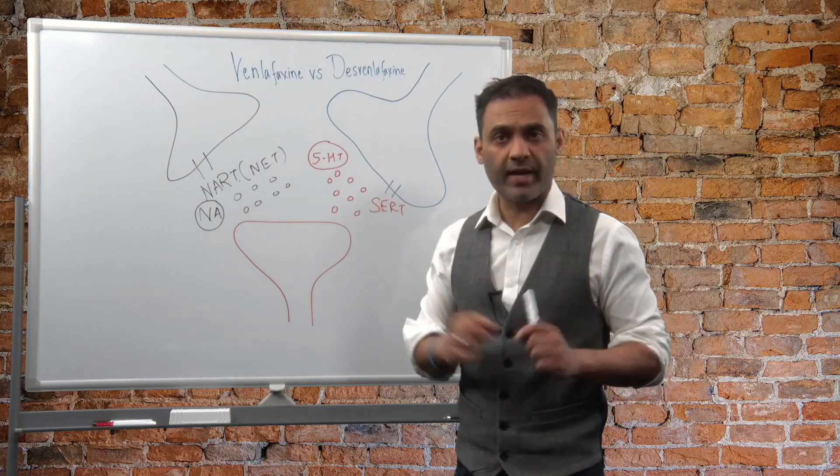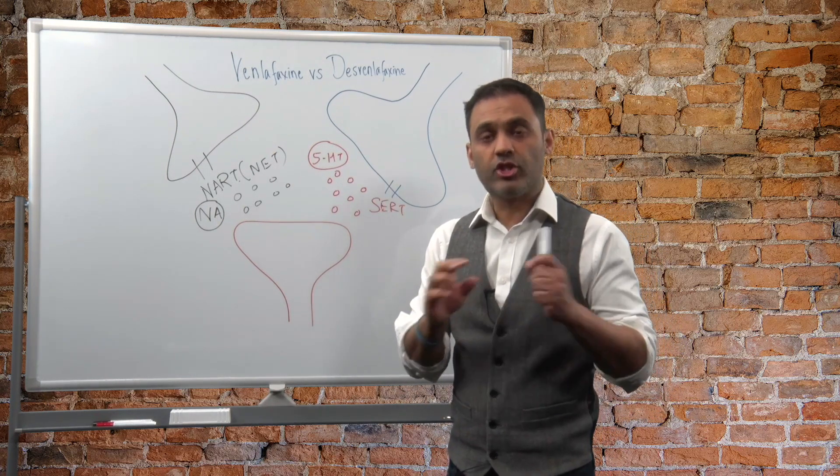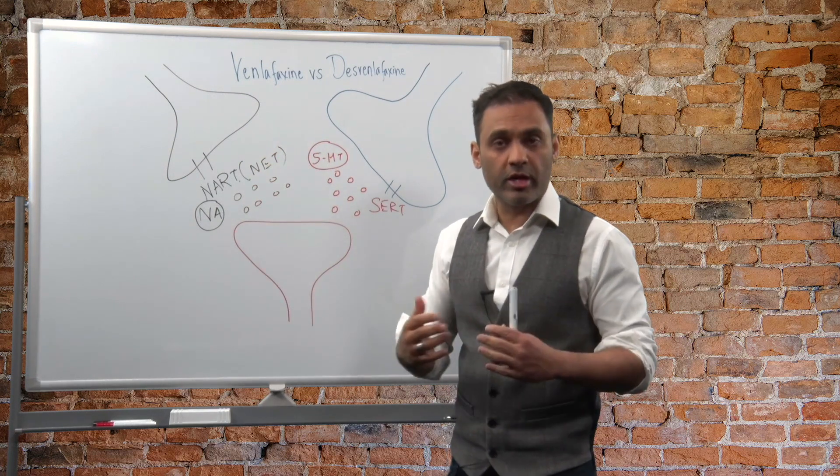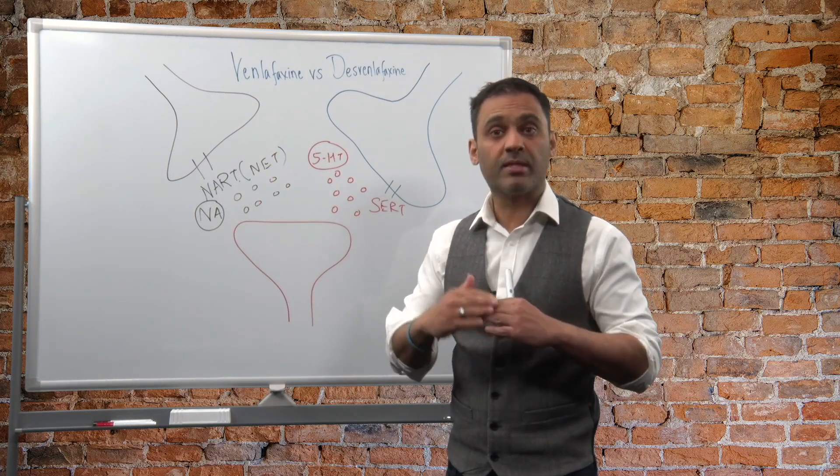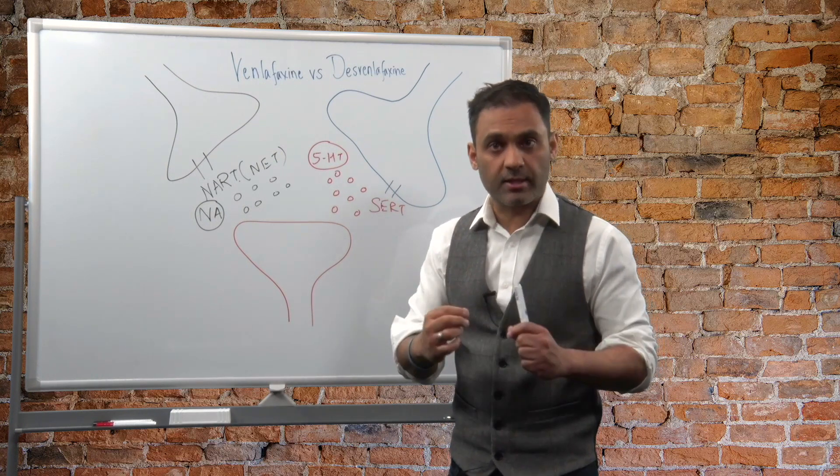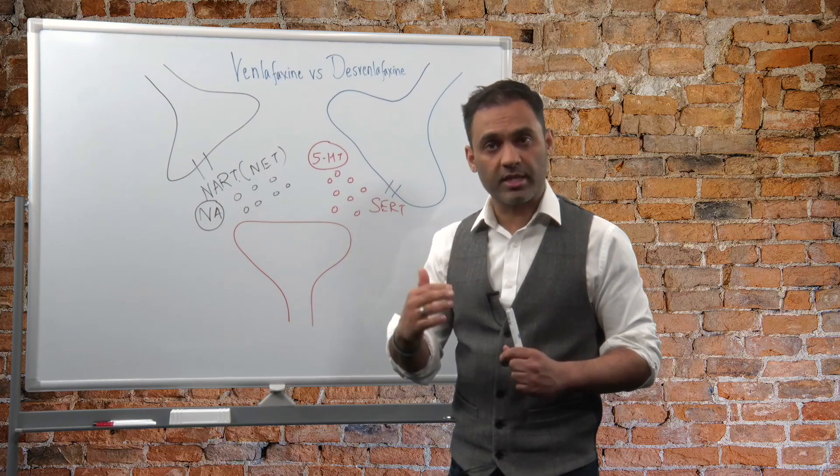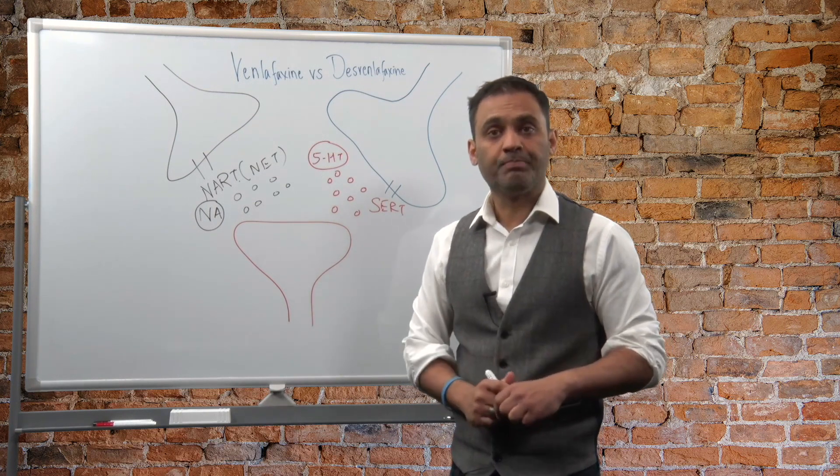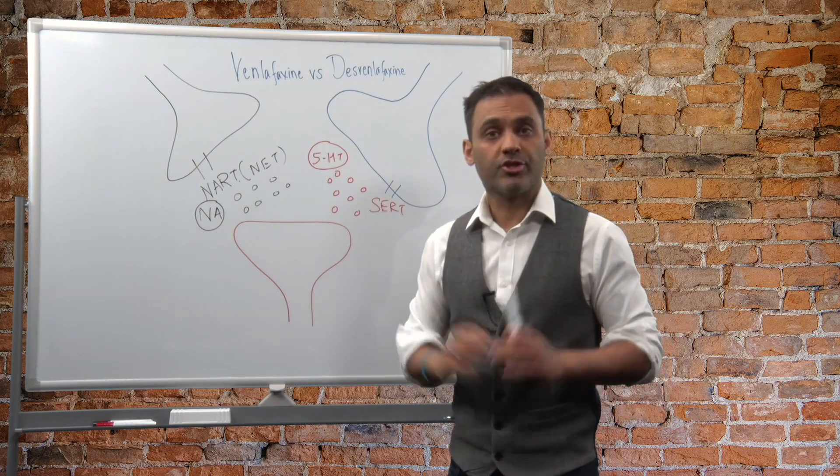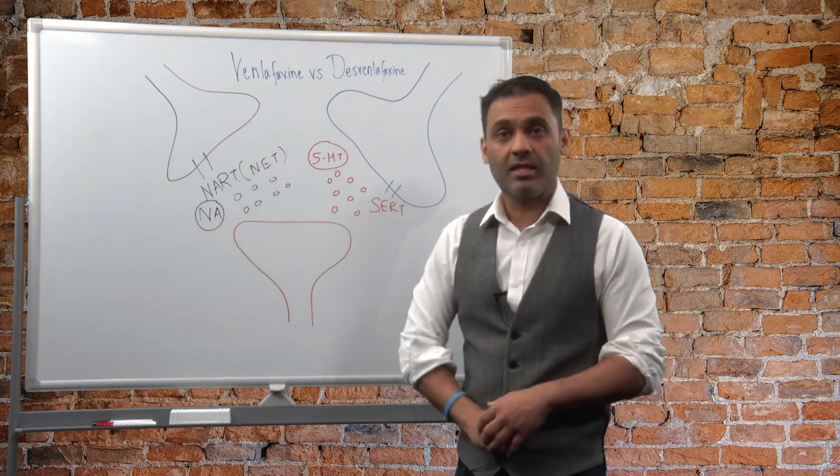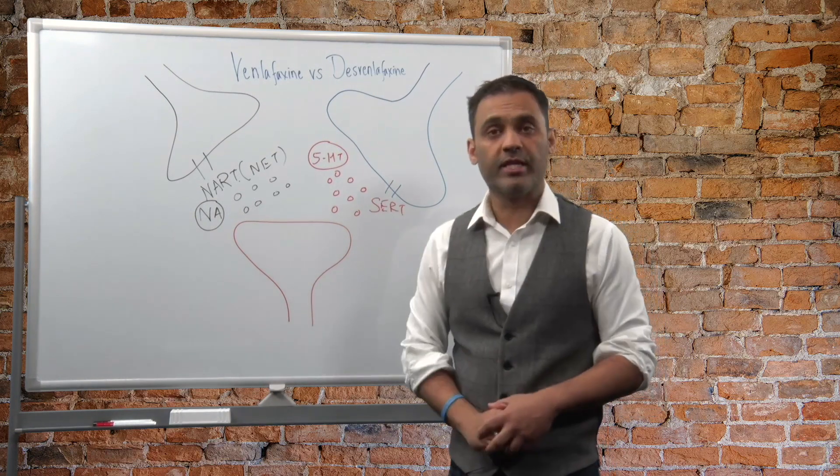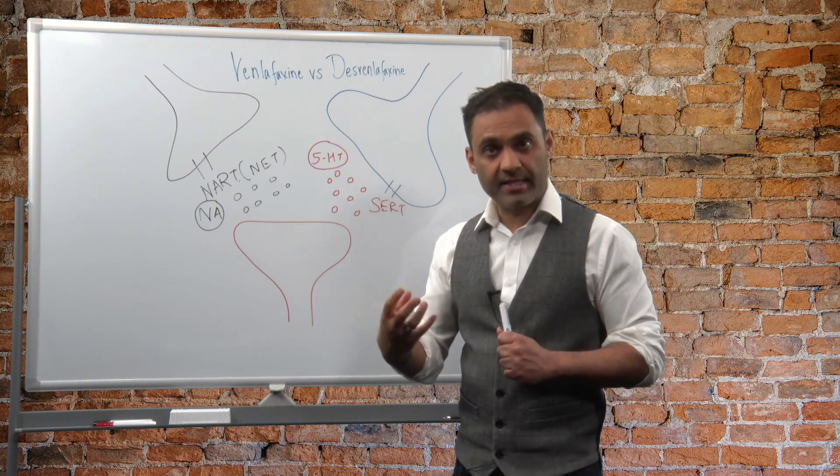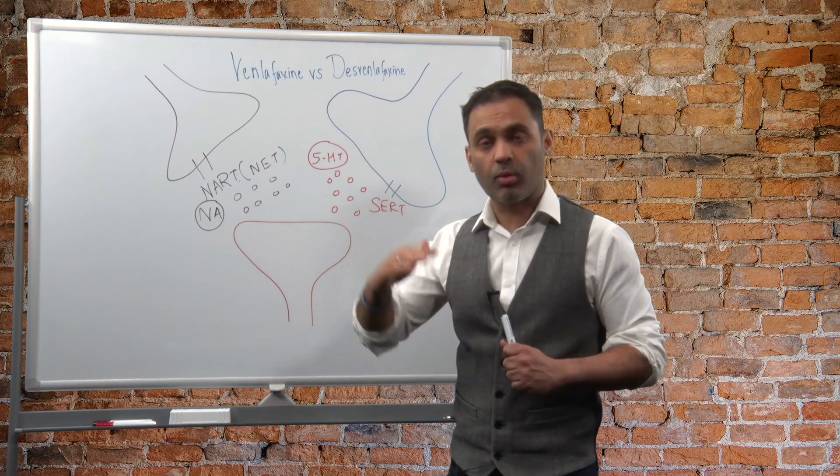So let's cover venlafaxine first. You see venlafaxine is really a dual agent in a way. The serotonin norepinephrine or noradrenaline reuptake inhibition happens sequentially and is dose dependent. Which means that when I initiate venlafaxine at a lower dose of 37.5 and go up to 75 mg, at 75 mg it has a 30 fold greater affinity to SERT. Compare that to Desvenlafaxine which has only a 10 fold affinity to SERT. So we get a lot more serotonin inhibition with venlafaxine at 75 and it sequentially rises the serotonin.